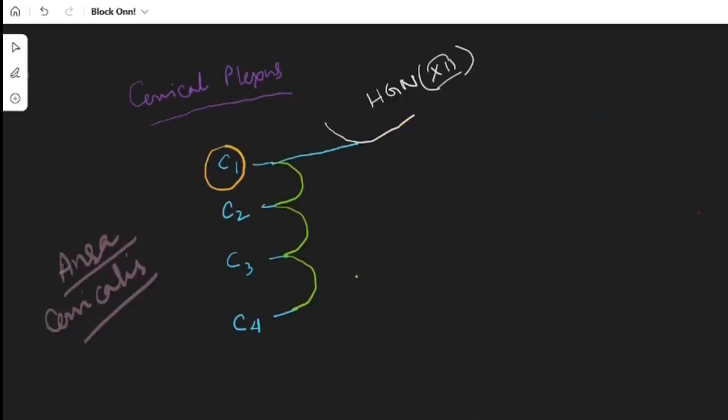The ventral rami of C1 unites with the hypoglossal nerve and gives three branches: nerve to geniohyoid muscle, nerve to thyrohyoid muscle and the superior root of ansa cervicalis.